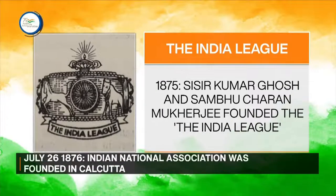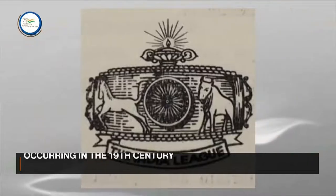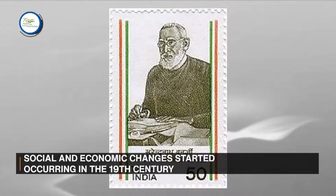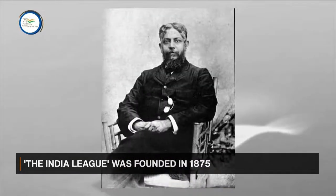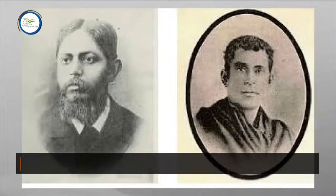In 1875, Sisir Kumar Ghosh and Shambhu Charan Mukherjee founded the India League to represent the middle class and work towards a sense of nationalism among the people. However, the league was dismembered, and afterwards Surendranath Banerjee founded the Indian Association along with his friend Anand Mohan Bose on the 26th of July, 1876.